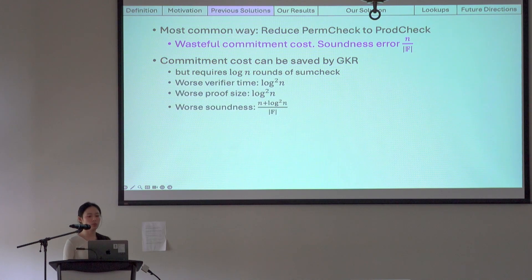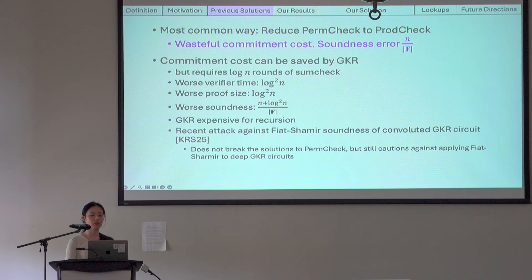This leads to worse verifier time, worse proof size, and worse soundness, and is certainly too large to be put on the blockchain. Moreover, GKR is expensive for recursion and parallelism. And there is also a recent attack against the Fiat-Shamir soundness of convoluted GKR circuit, which, even though it does not break the aforementioned solutions to permutation check, still cautions against applying Fiat-Shamir to deep GKR circuits.